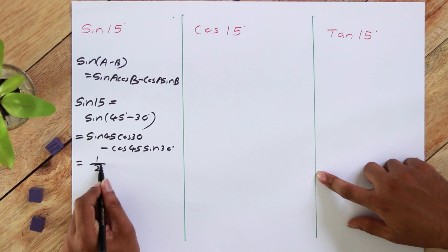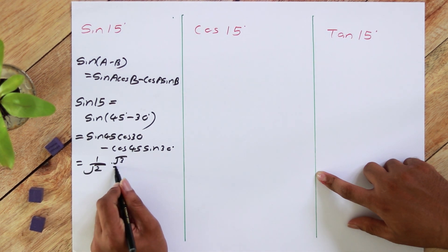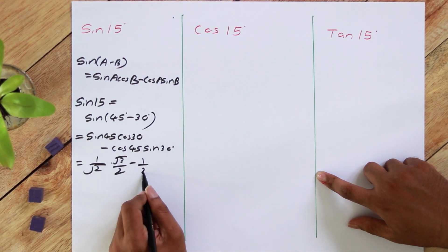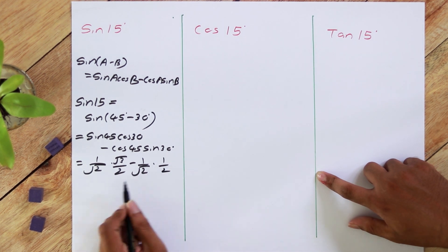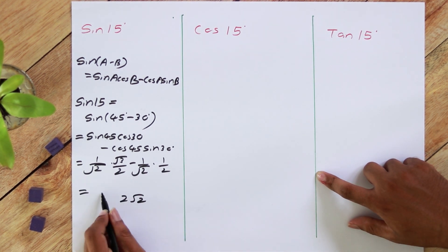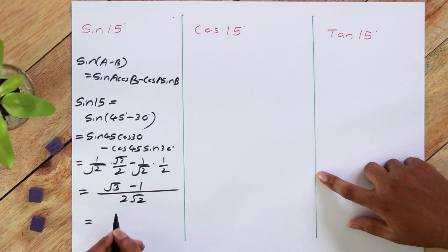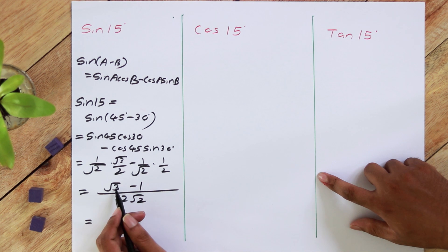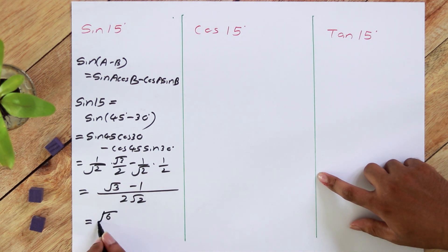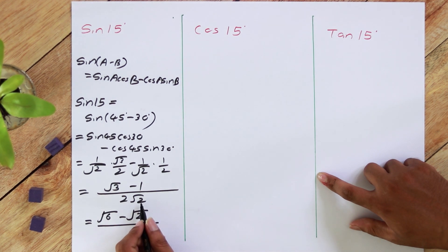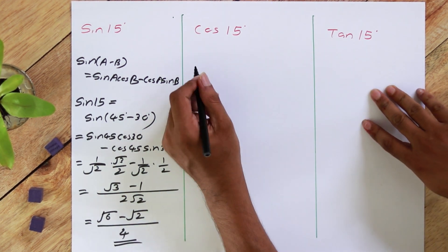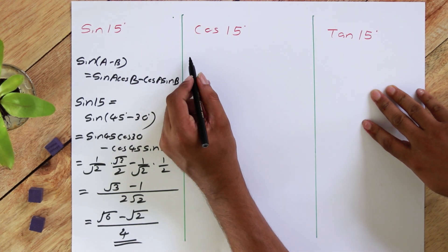So we write sin 45 cos 30 minus cos 45 sin 30. Sin 45 is 1 over root 2, cos 30 is root 3 over 2. So the denominator is 2 root 2 and above we have root 3 minus 1. Rationalizing the denominator by multiplying up and down by root 2: root 3 times root 2 is root 6, minus root 2, over 4. So sin 15 equals (root 6 minus root 2) over 4.